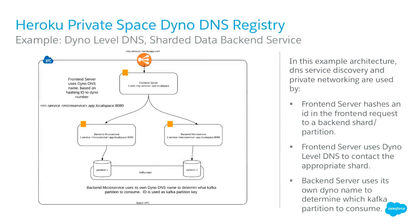A more stateful use case uses dyno DNS names directly — for example, a sharded service. If you have a lot of data you want to keep in memory and shard out, you could use Heroku Kafka with a topic with two partitions, each back-end server consuming a specific partition. The front-end knows that key space of ID 1 goes to dyno 1, ID 2 goes to dyno 2, using dyno DNS names to route to the correct back-end. This gives you an in-memory, stateful microservice architecture on Heroku.